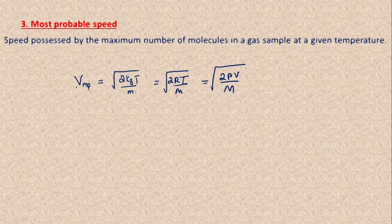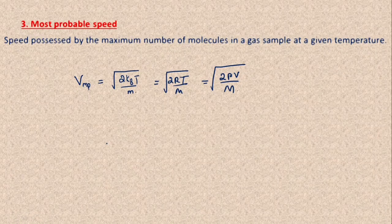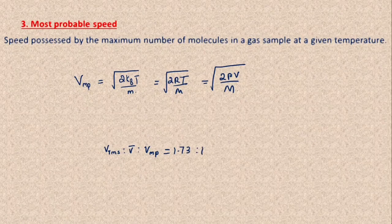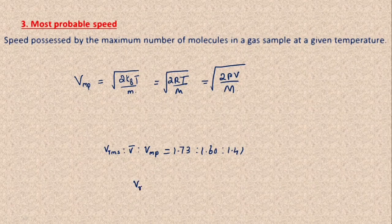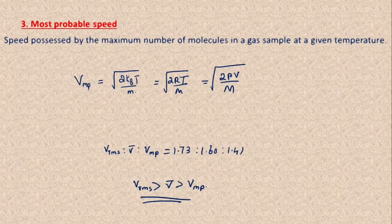We have now discussed three cases: average speed, root mean square speed, and most probable speed. If you calculate the ratio, the relation between V_rms, average speed, and most probable speed is 1.73 : 1.60 : 1.41. From this we can clearly see that V_rms is greater than average speed, which is greater than most probable speed. Hope you understand this. Thank you.